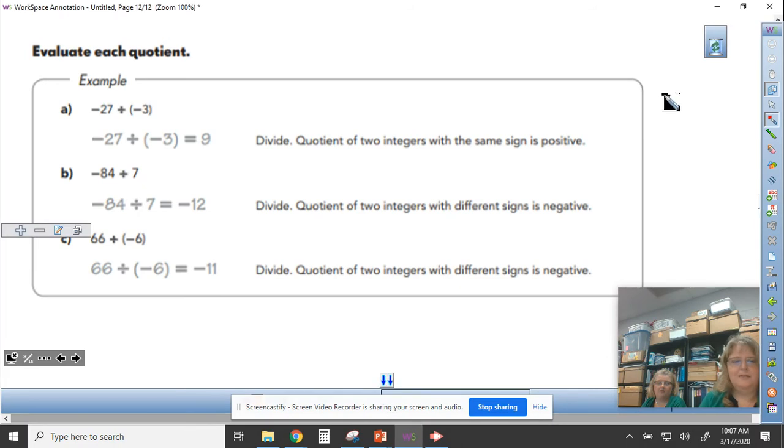Again with dividing, if I have a problem like negative 27 divided by a negative 3, in which case both of those are negative numbers so they have the same sign, I know that my answer is going to be a positive answer. Then I just divide like normal: 27 divided by 3 is 9. I end up with a positive 9.